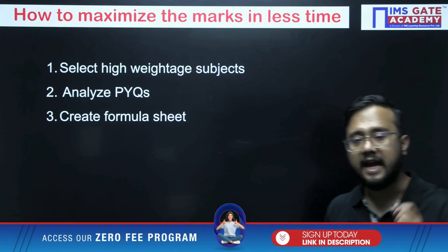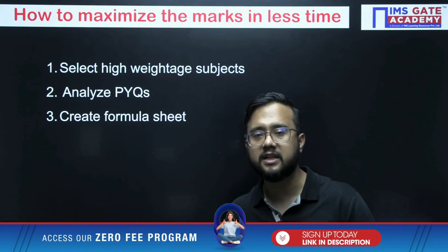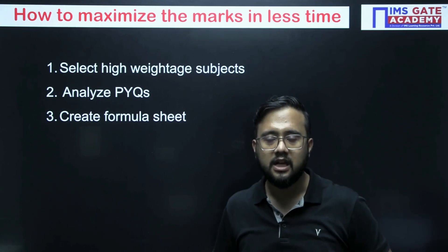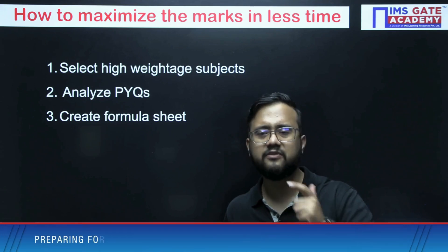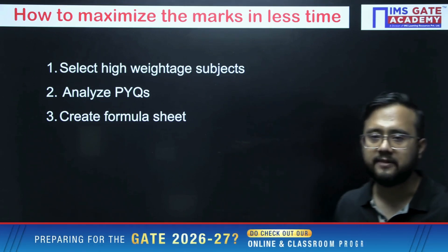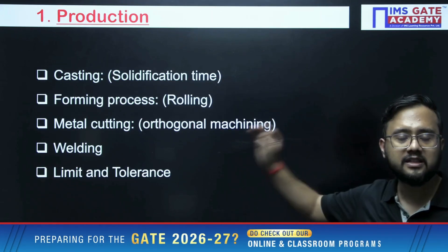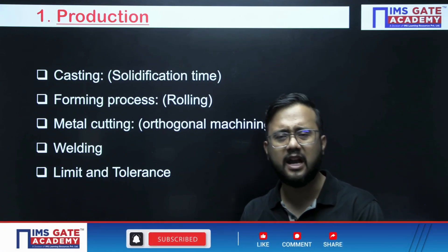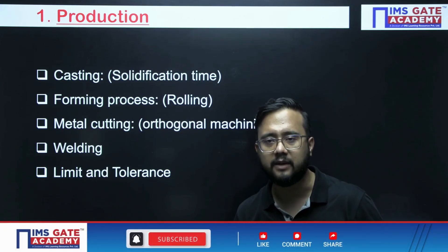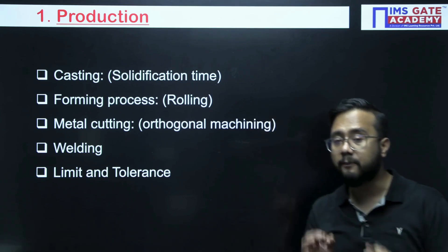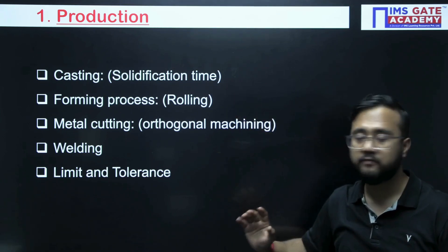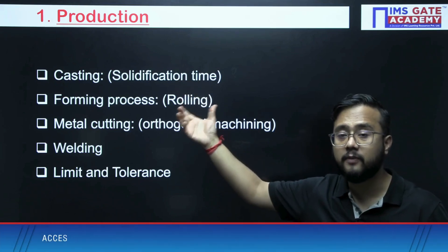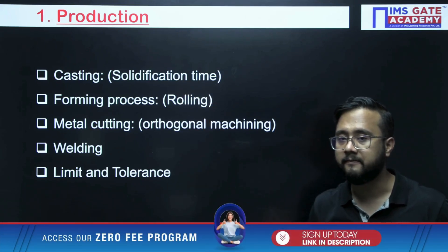In mechanical engineering, what are the high-weightage subjects apart from mathematics and aptitude? Talking only about technical subjects — the first high-weightage subject is Production. Almost every year, a minimum of 15–16 marks comes from production. The topics from which you can expect questions: Casting, where specifically numericals on solidification time are common.